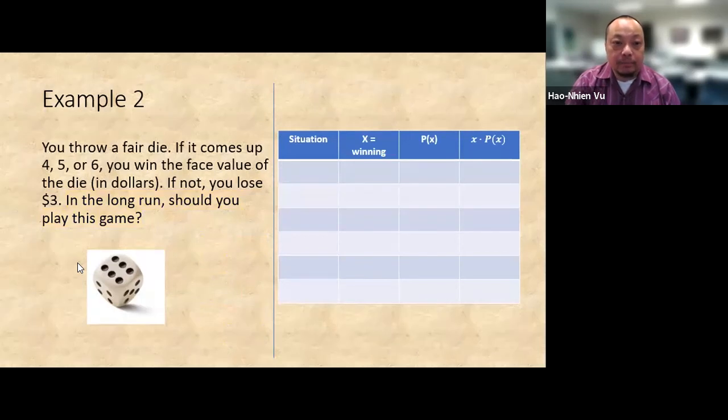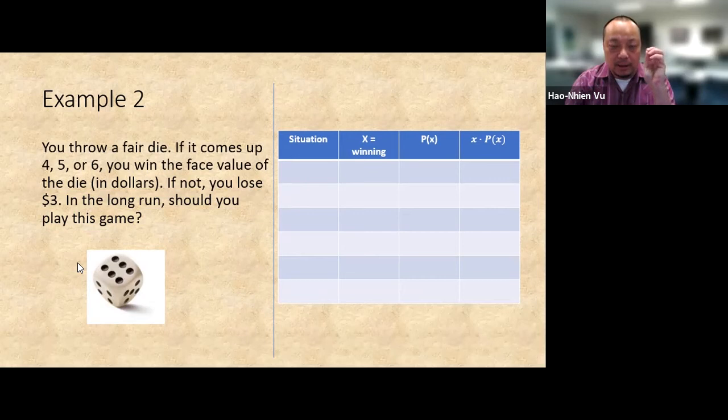Now let's make a table. I know I want these four columns: the situation, the x, which now I know is the winning, the probability of x, and the multiplication x times p of x. I really don't know how many rows I need, so I just give myself a whole bunch.